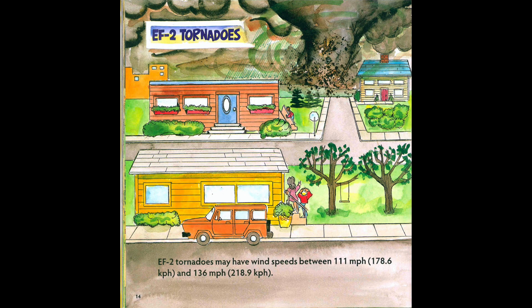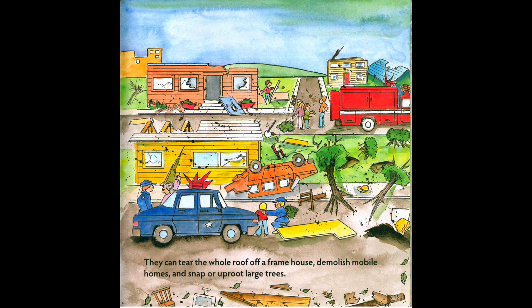EF2 Tornadoes may have wind speeds between 111 miles per hour (178.6 kilometers per hour) and 136 miles per hour (218.9 kilometers per hour). They can tear the whole roof off of a frame house, demolish mobile homes, and snap or uproot large trees.